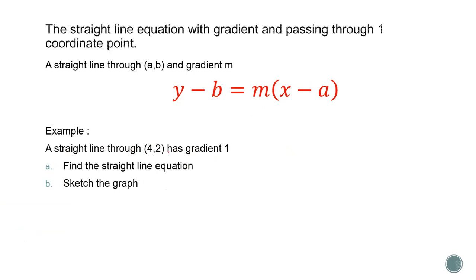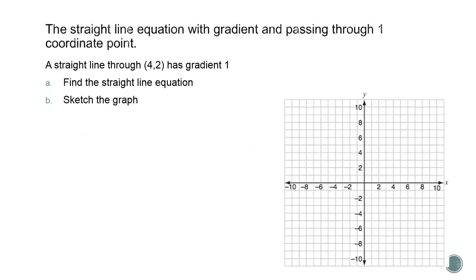According to this formula, this one 4 is a and 2 is b while m equals 1. So a is 4, b is 2 and m equals 1. We're going to apply into this formula, y minus b equals m times x minus a. All right.